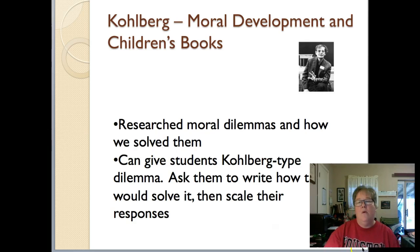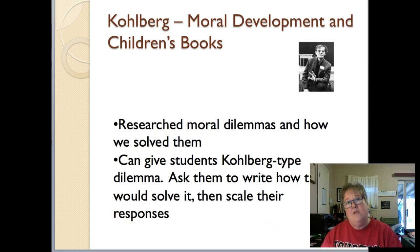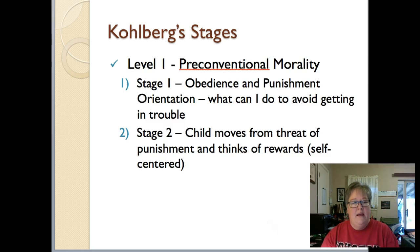The last theorist is Kohlberg, who had a theory about moral development. He researched moral dilemmas, looked at how people solved them, and based on the solutions placed respondents on a continuum. You can do the same in your classroom — give students a Kohlberg-type dilemma, ask them to write or tell you how they'd solve it, and then scale their responses on the continuum. There are three levels, each with two stages.